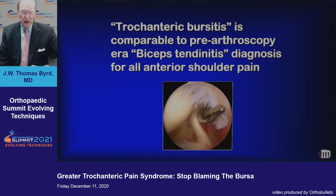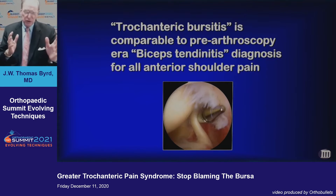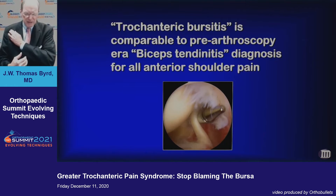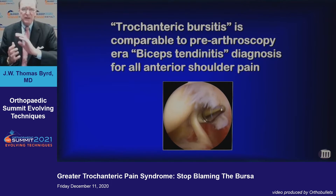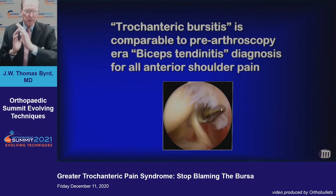To me, trochanteric bursitis is comparable to the pre-arthroscopy era biceps tendonitis diagnosis for anterior shoulder pain. Most of the people in the audience aren't familiar with the pre-arthroscopy era shoulder anything, but back before the arthroscope, all anterior shoulder pain got labeled as biceps tendonitis. With the arthroscope, we realized that isolated biceps tendonitis is uncommon. Typically, those are SLAP tears, undersurface rotator cuff tears, subscap — almost anything but not biceps tendonitis.